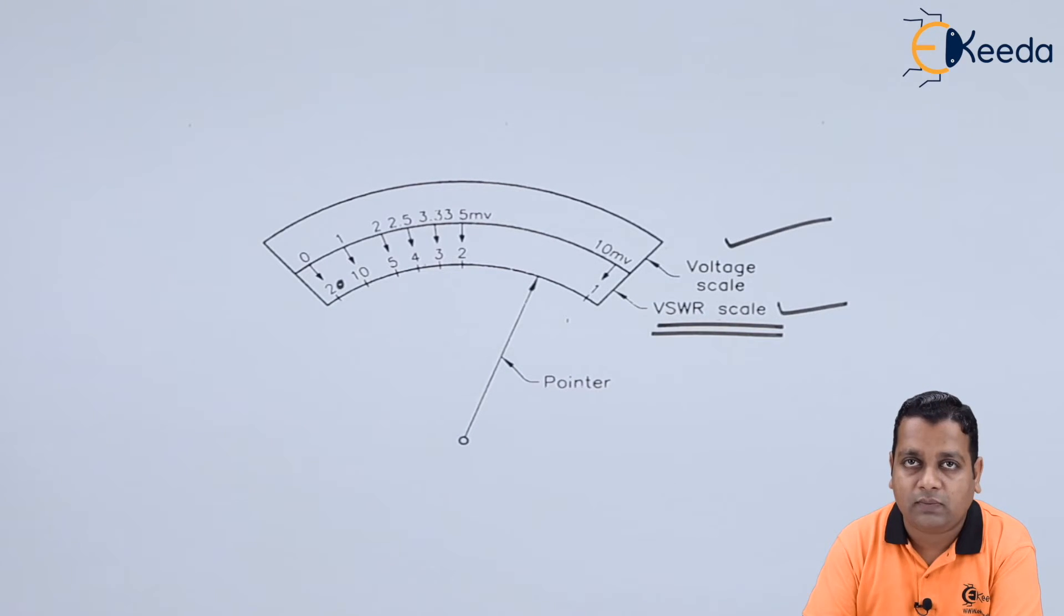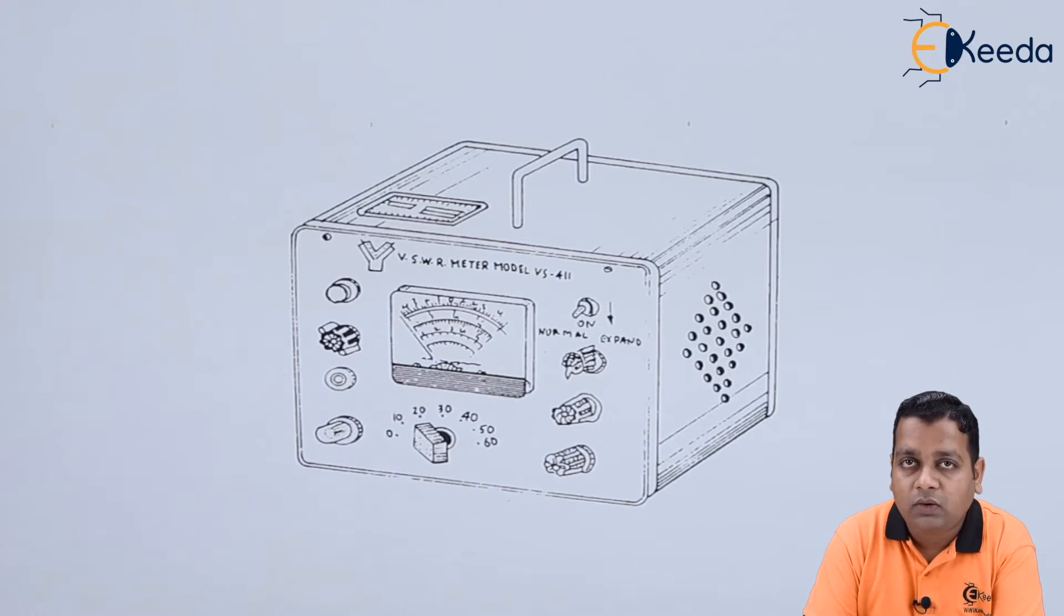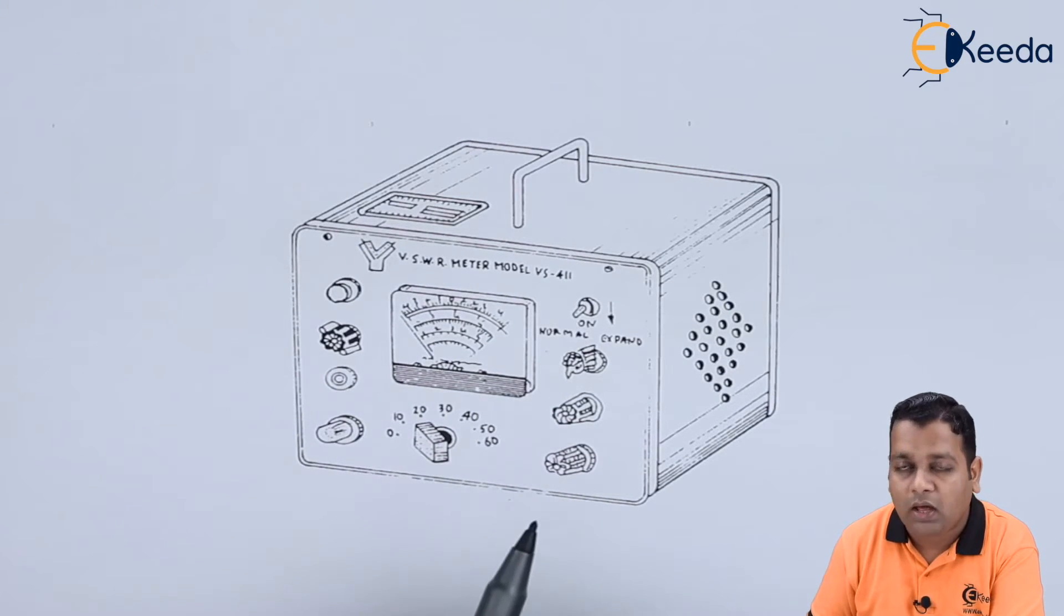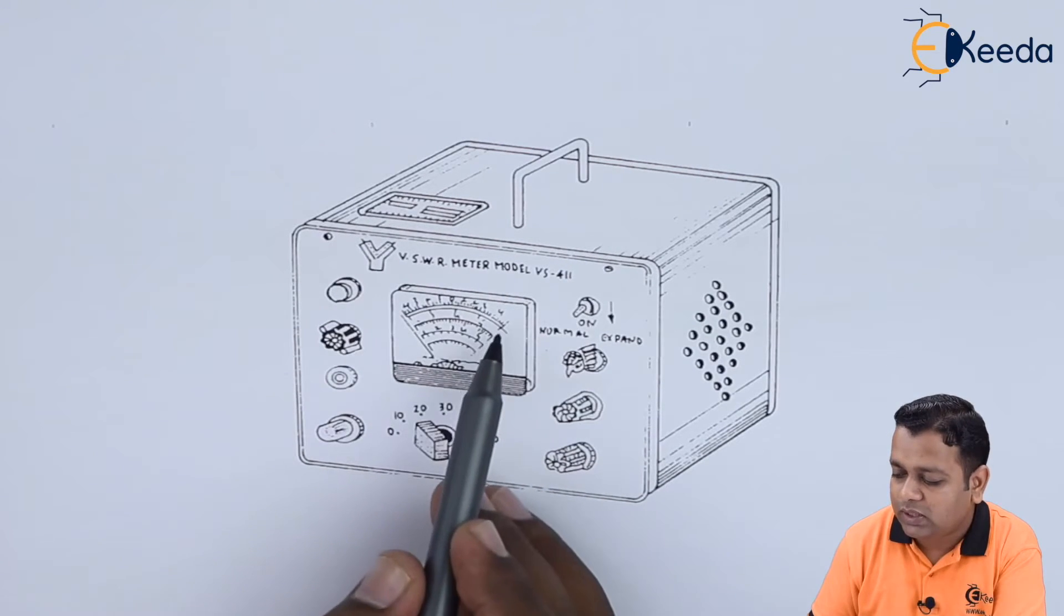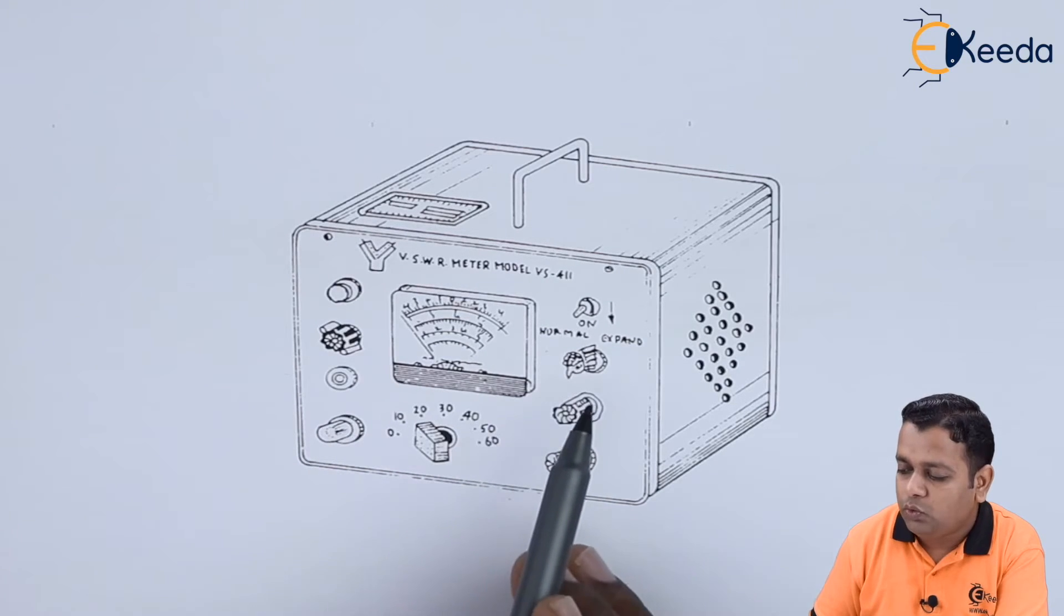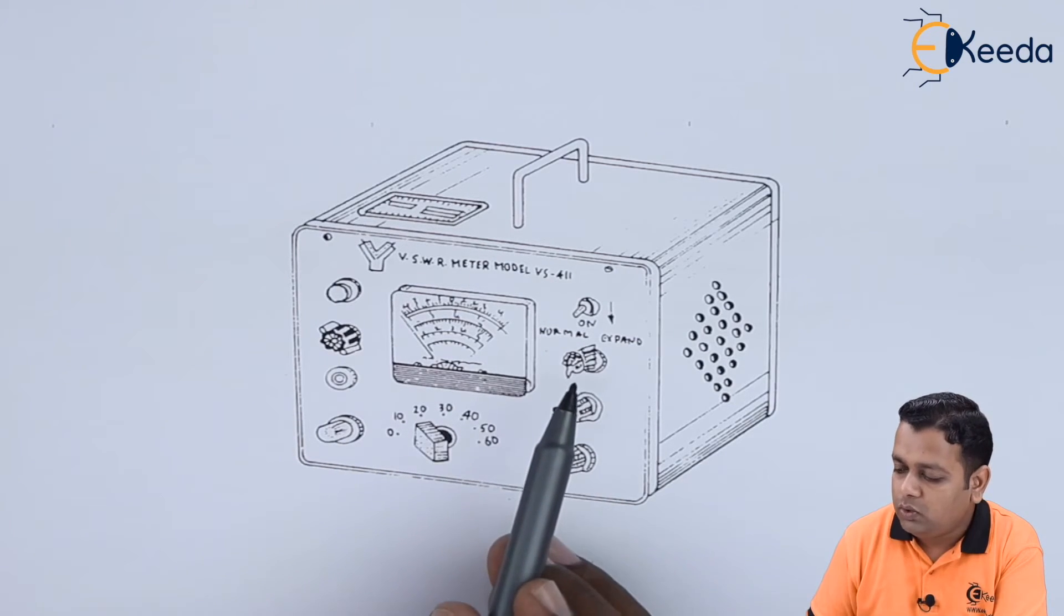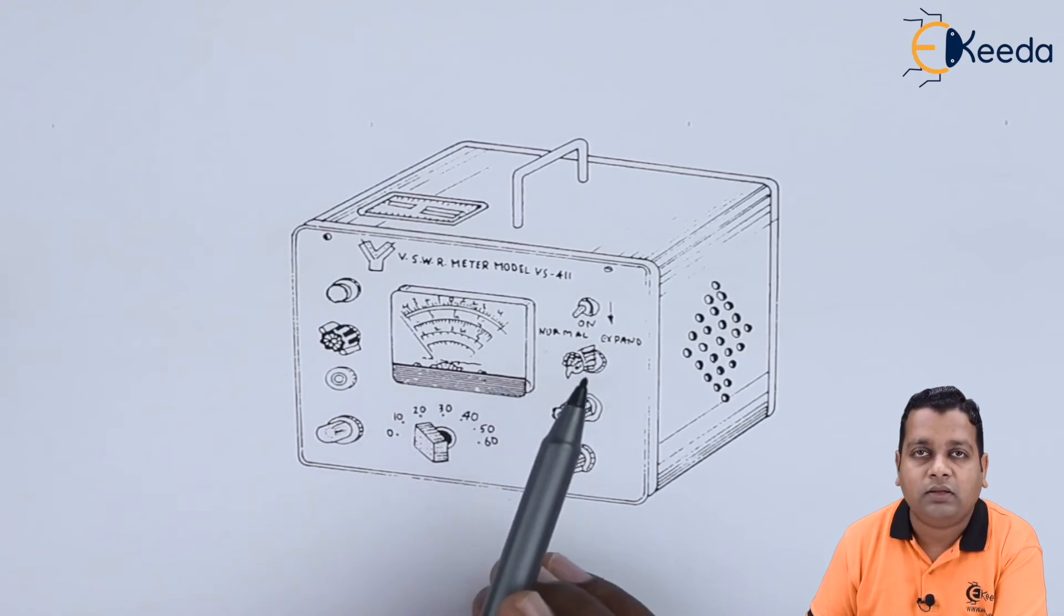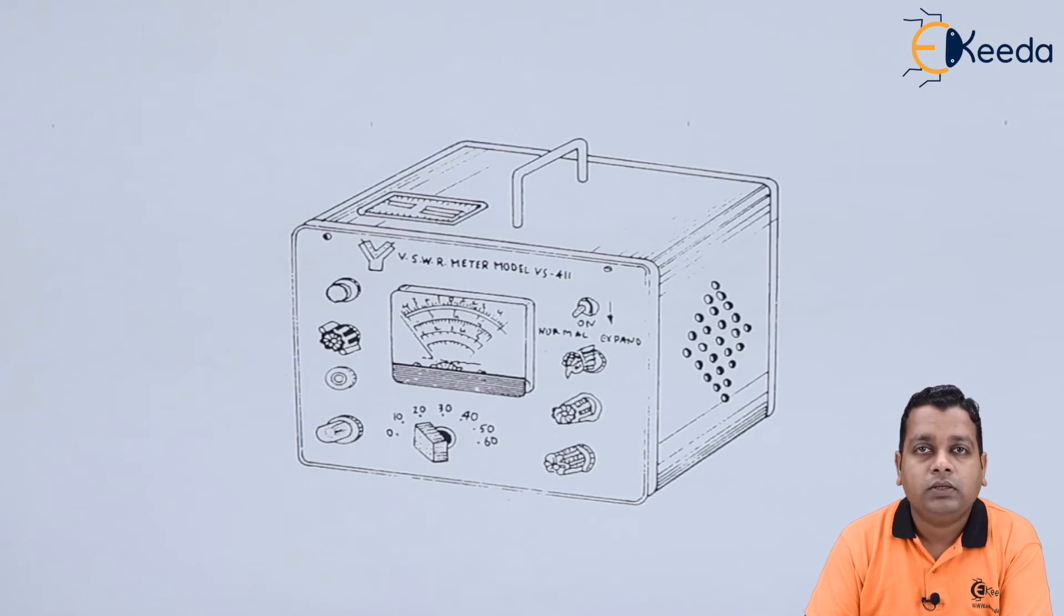In the earlier schematic only the scales were represented. This is the actual device you can visualize into the three dimension. This is the mention of the scale and the various knobs are present to operate the VSWR meter at the different modes and the requirements there.